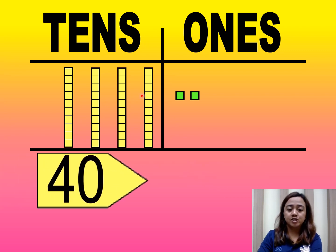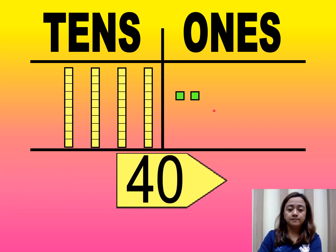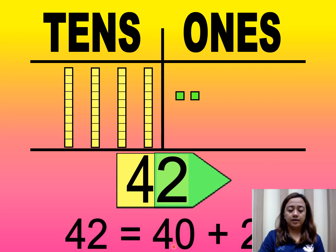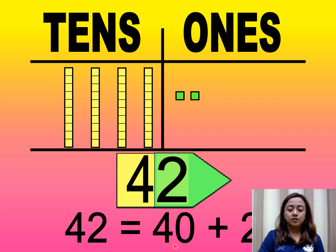Four tens is equal to forty. Two ones is equal to two. Now let's use the expanded form. In expanded form, we use addition. So here, forty-two equals forty plus two. Forty is four tens, two is two ones.